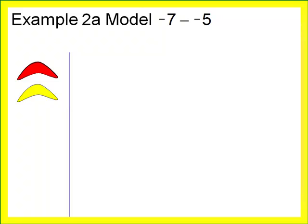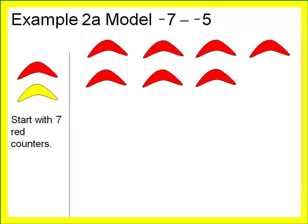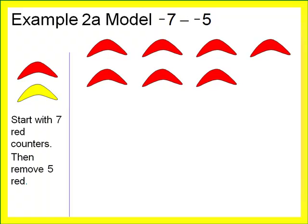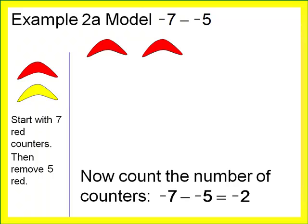For example two, let's model negative seven minus negative five. Start with seven red counters to represent negative seven. Subtraction means to take away, so we take away five red counters. What remains in the workspace is the answer: negative seven minus negative five equals negative two.